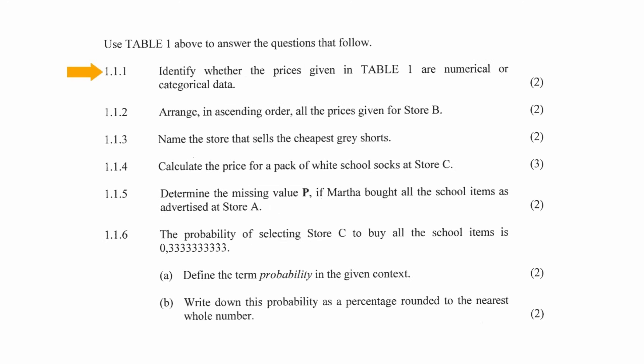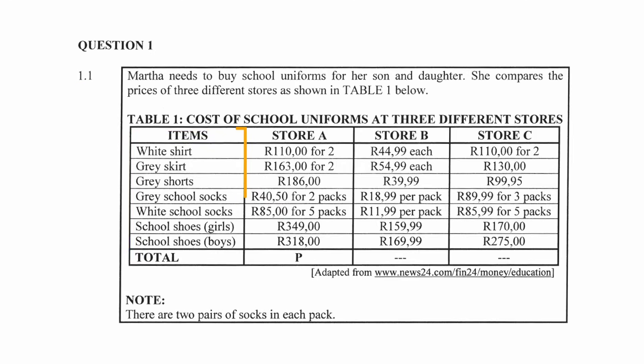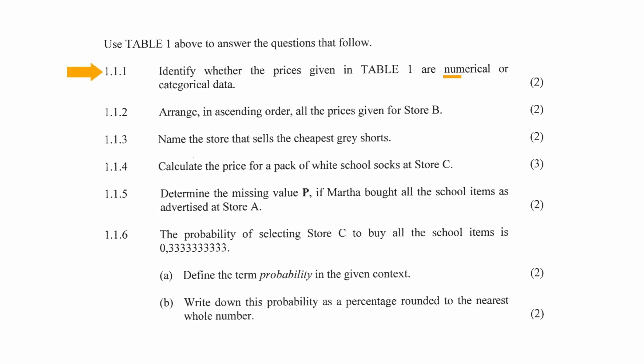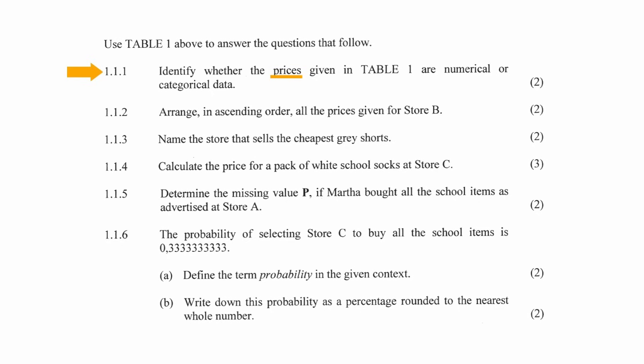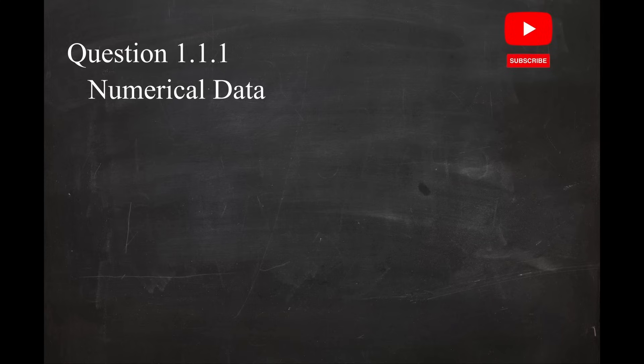In question 1.1.1, you are instructed to identify whether the prices given in Table 1 are numerical or categorical data. Categorical data is data that can be divided into groups or categories, like the different items that need to be purchased, while numerical data is data that is measured or counted, like the prices of the different items. Since the question asks you to base your decision on the prices given in the table, you have to say that this data is numerical data.